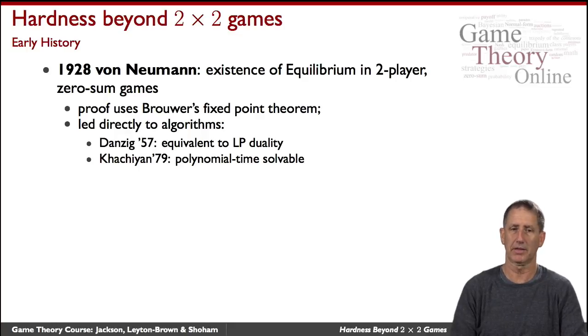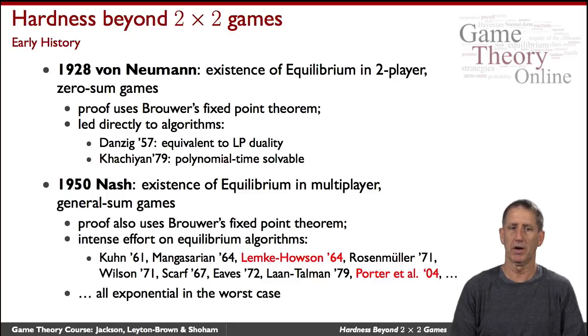When you go beyond zero-sum games, when John Nash proved the existence of equilibrium for general-sum games, he used the same Fixed Point Theorem of Brouwer, and that also informed a series of algorithms noted on the slide. I will note that all of these are exponential in the worst case.